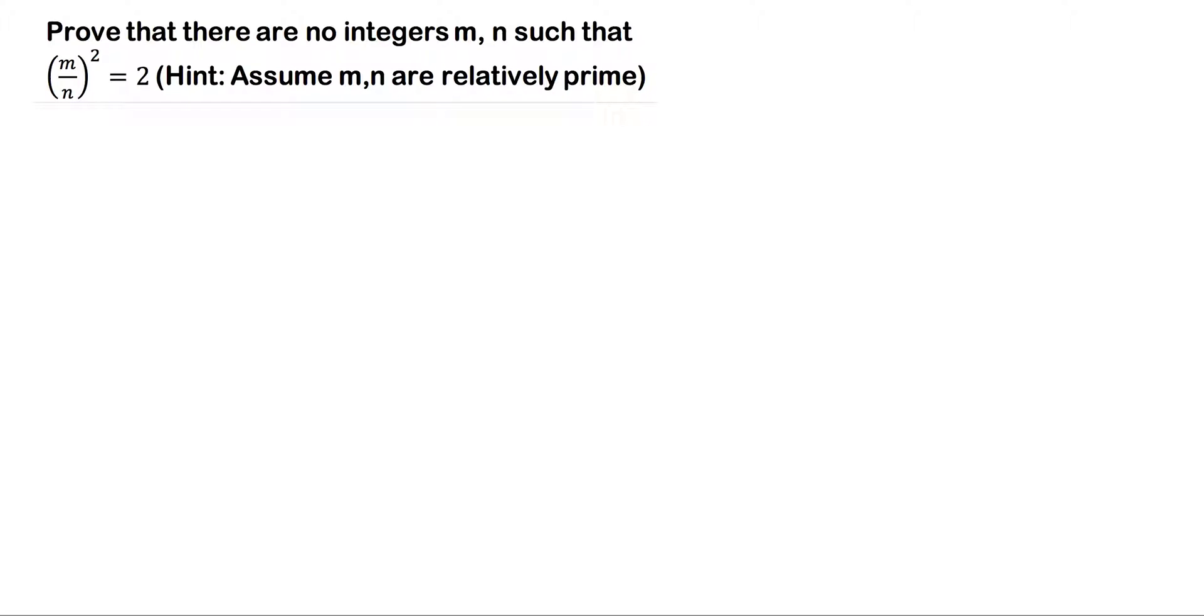Prove that there are no integers m and n such that m over n squared equals 2. Hint: assume m and n are relatively prime.